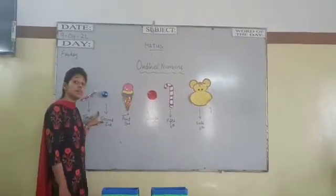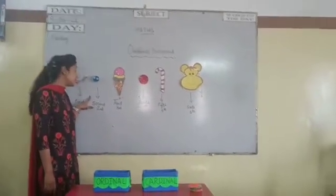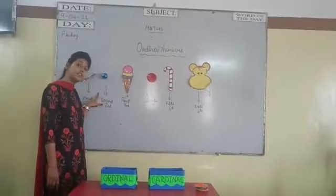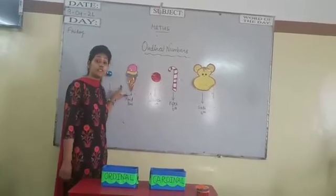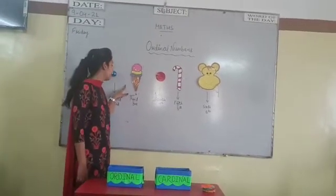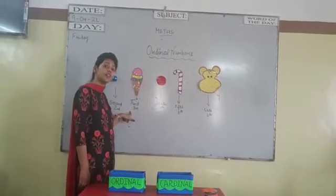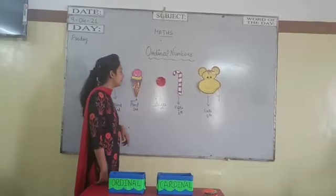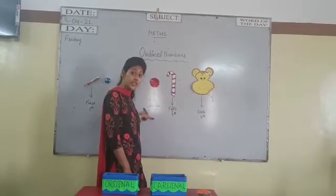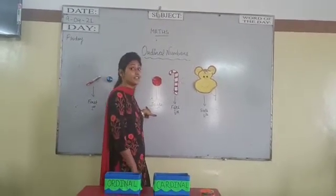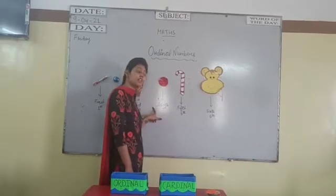What is the position of bowl? Second. S-E-C-O-N-D, second. What is the position of ice cream? Yes, third. T-H-I-R-D, third. What is the position of cherry? Yes, fourth. F-O-U-R-T-H, fourth.